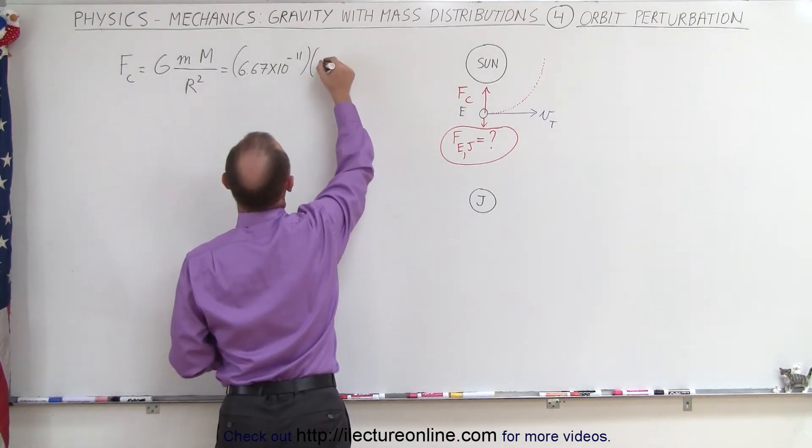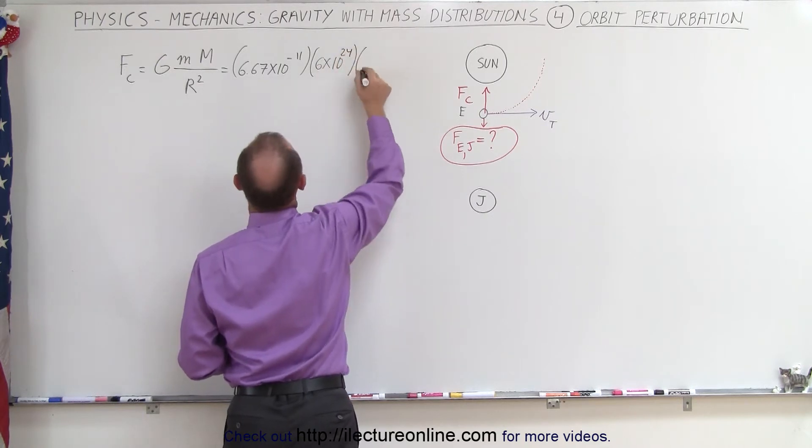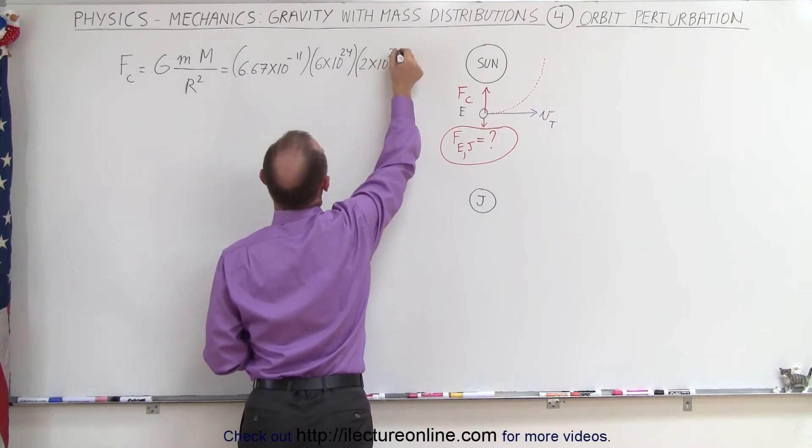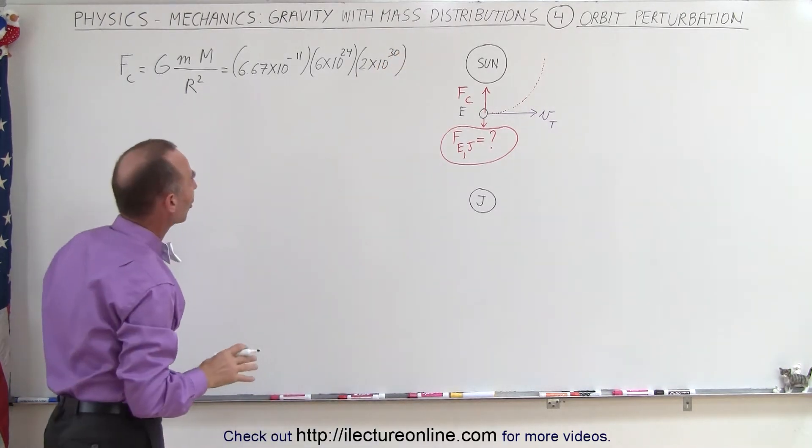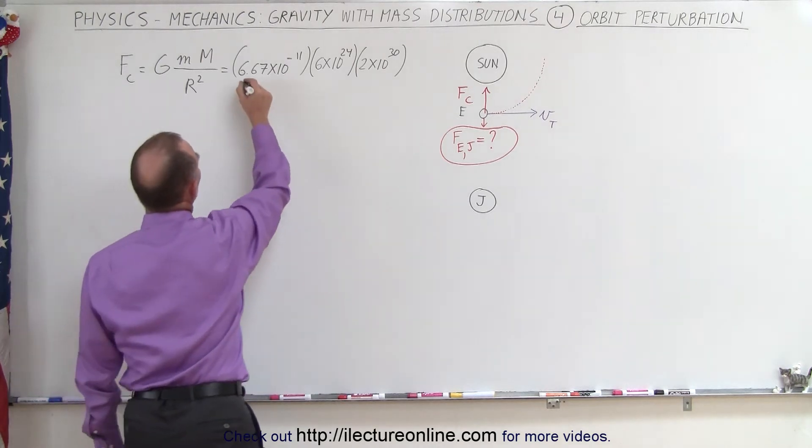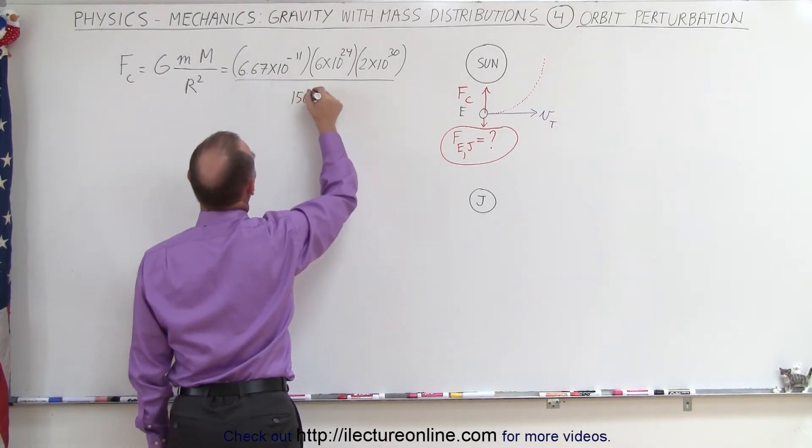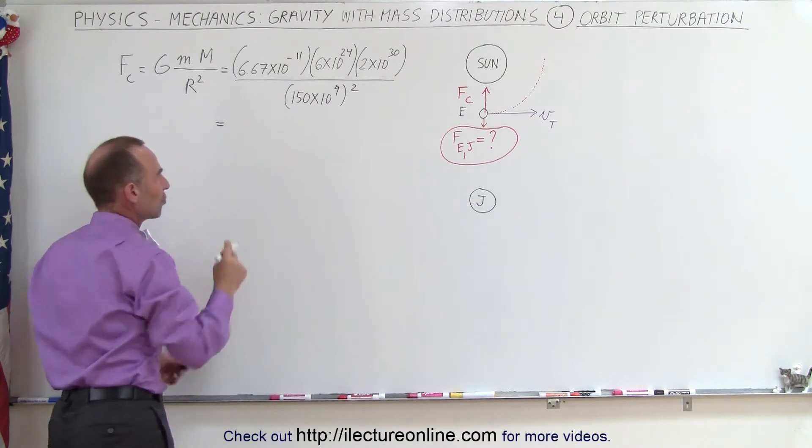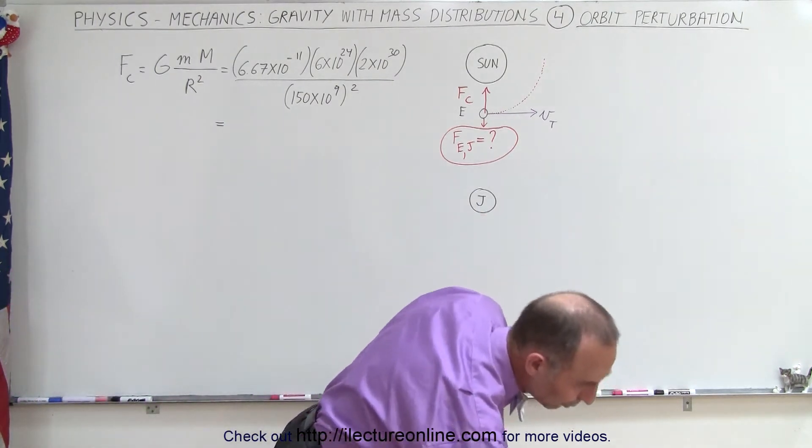The mass of the Earth, let's round it off to 6 times 10 to the 24 kilograms, and the mass of the Sun is about 2 times 10 to the 30th kilograms, about 300,000 times or so larger than the Earth. And then we divide that by the radius, which is 150 million kilometers, or 150 billion meters, and we have to square that. So that gives us the force of attraction between the Sun and the Earth, which is the centripetal force, keeping the Earth in its orbit.